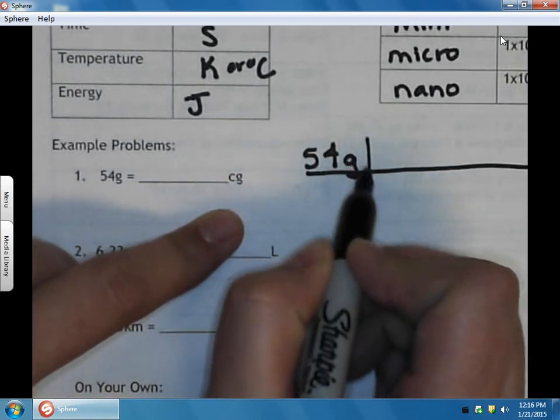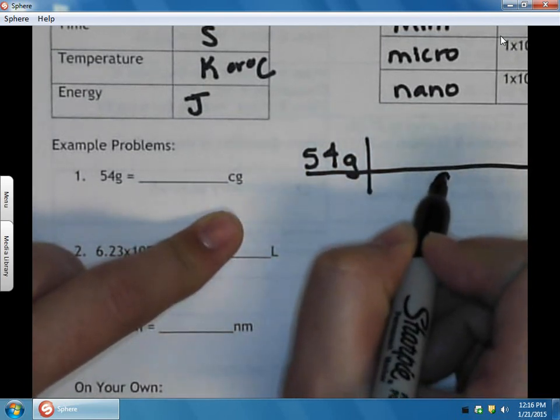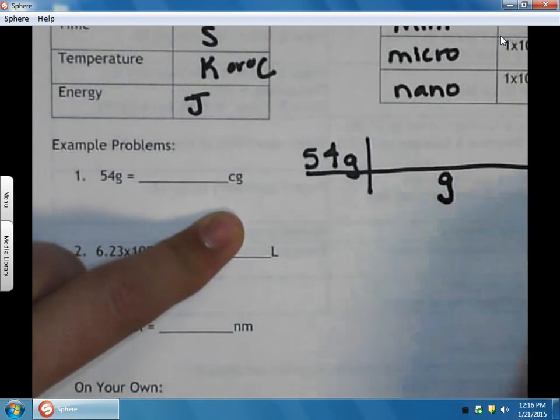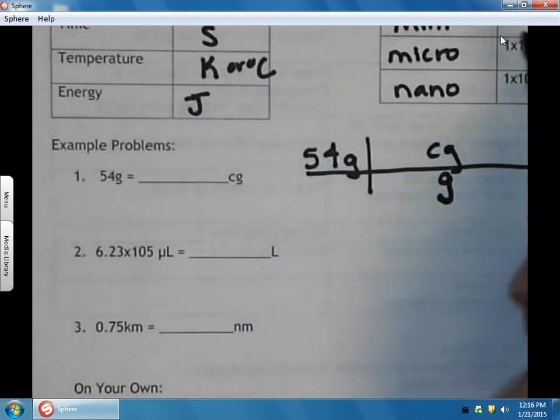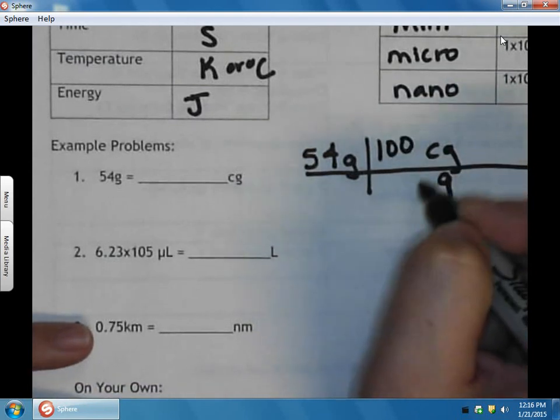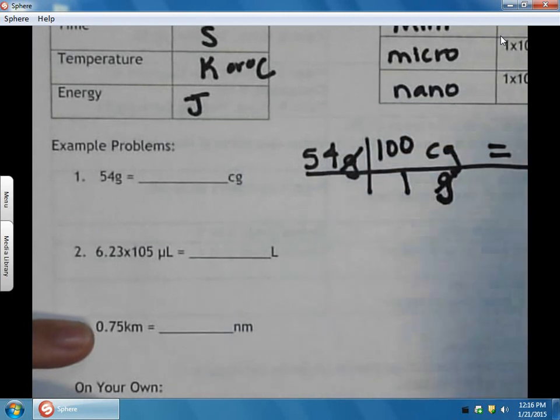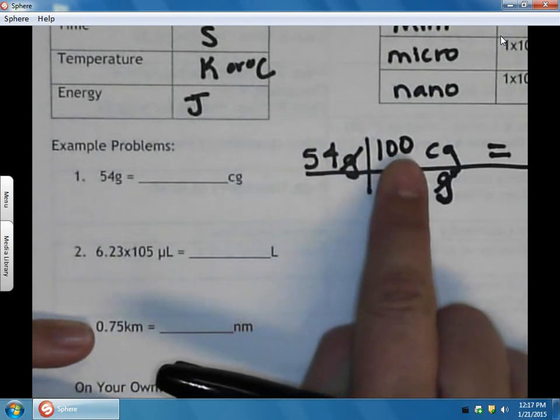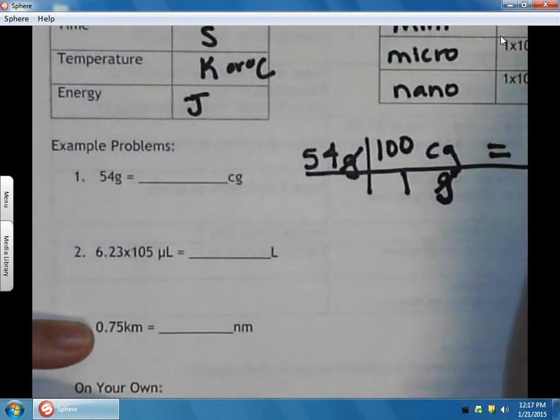We want to convert to centigrams. So the unit we no longer want, we need to cancel out. In math class, to get things to cancel, you divide by them. So if you want grams to cancel, put grams on the bottom. We want centigrams, so put that on the top. We just talked about how centi means 100, so there's 100 centigrams for every 1 gram. Our gram units cancel and we're left with centigrams. This tells us what math operation to do. Since the two numbers are on top, we multiply them. So 54 times 100 equals 5,400 centigrams.